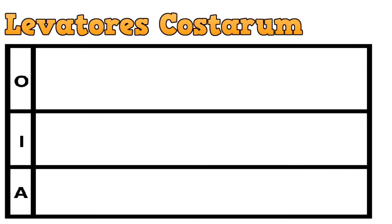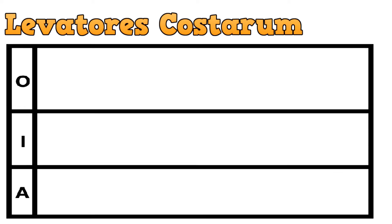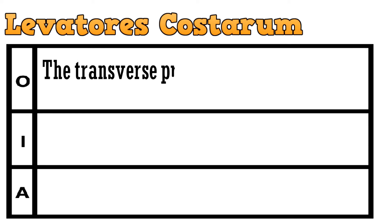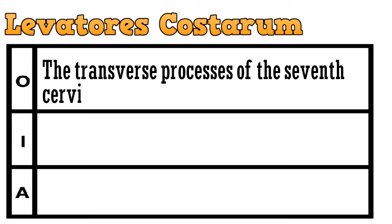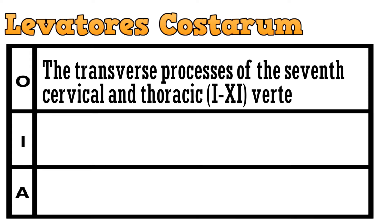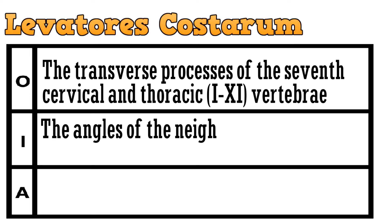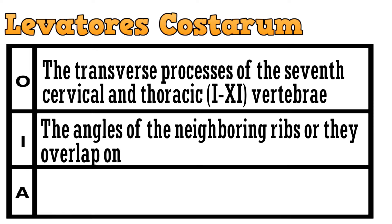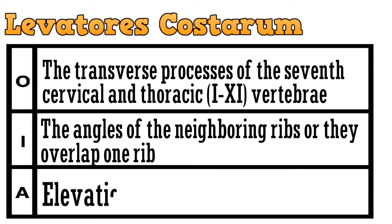The third muscle is levatores costarum. These muscles originate from the transverse processes of the 7th cervical and 1st to 11th thoracic vertebrae, and get inserted into the angles of the neighboring ribs, or the overlapped one rib. The action of these muscles includes elevation of the ribs.